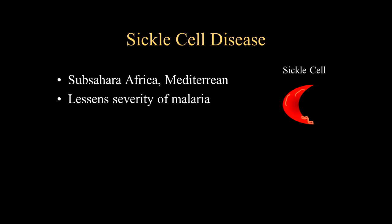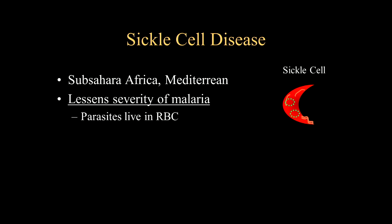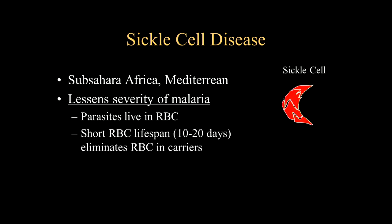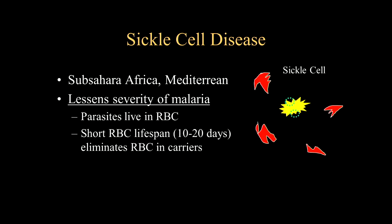Sickle cell disease occurs primarily around the sub-Saharan African region and the Mediterranean, in areas with a high prevalence of malaria. Patients who have evolved and survived many years of malaria actually have a beneficial effect from their sickle cell disease, because the parasites live within the red blood cells. With the shortened lifespan of the abnormal sickle-shaped cells — only about 10 to 20 days — they are effectively eliminating the parasites from the red blood cells in these sickle cell carriers.